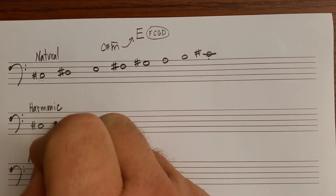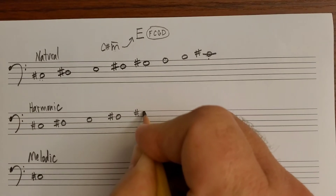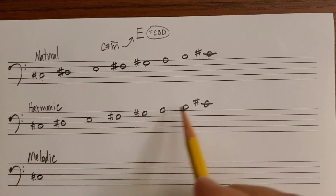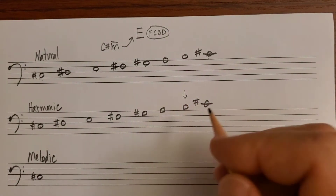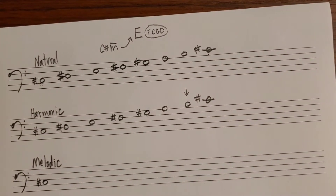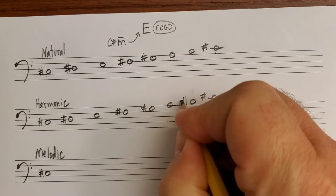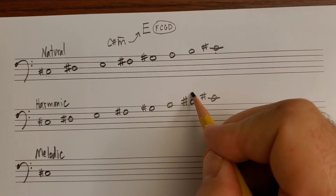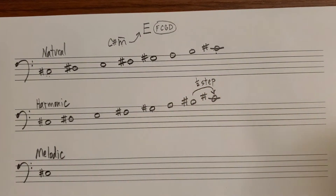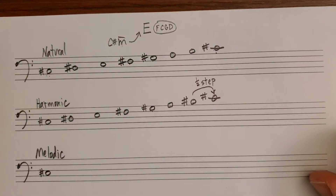To write harmonic minor, again start with natural minor first. Then take a look at scale degree seven — count up one, two, three, four, five, six, seven. Another way to find it is to start on the top and go down one. For harmonic minor you're going to raise scale degree seven by half step. In this case the B from natural minor will become a B sharp. This creates a half step between seven and one — this is known as the leading tone. The leading tone is always a half step below the tonic and is a tone that really wants to lead or resolve back to the tonic note.